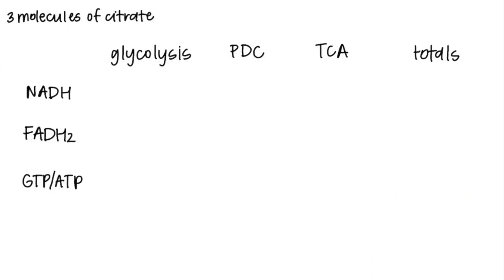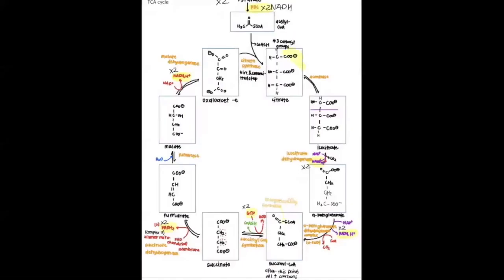Our last example asks how much ATP is yielded from three molecules of citrate being oxidized. Since citrate is involved in TCA only, we can go ahead and neglect glycolysis and PDC products. Taking a look at the TCA template, if we start at citrate, we start right here in the TCA cycle. So we still make an NADH, another NADH, a GTP, an FADH2, and another NADH — all of the products of one turn of the TCA cycle.